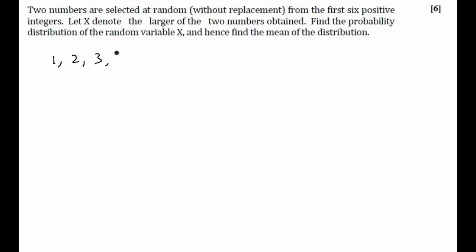The question is: two numbers are selected at random without replacement from the first six positive integers — 1, 2, 3, 4, 5, and 6. Let X denote the larger of the two numbers obtained. Find the probability distribution of the random variable X and hence find the mean of the distribution.